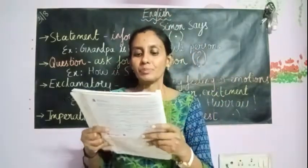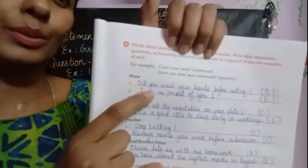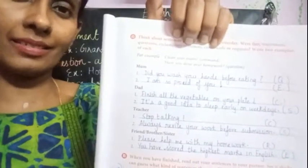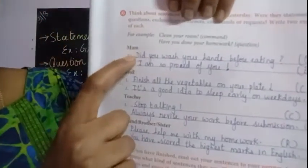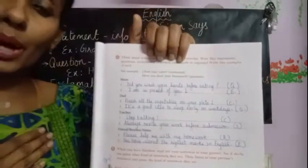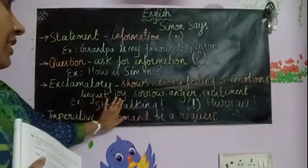The first person is mom. I have written sentences based on what I heard in my childhood. My mom usually asks me, 'Did you wash your hands before eating?' — that is a question. And most of the time she tells me, 'I am so proud of you!' — which is an exclamatory sentence. She is very happy, expressing a strong feeling of joy when she says she is proud of me.